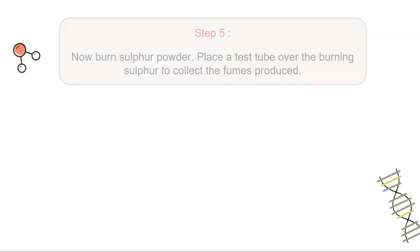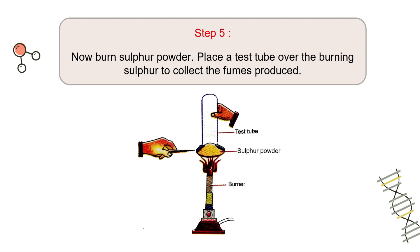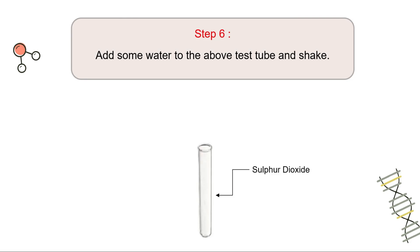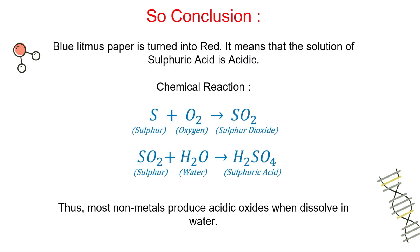Now let's do a similar activity with non-metals. The first step is to burn sulphur powder and place a test tube over the burning sulphur to collect the fumes — this is sulphur dioxide. Then add some water to the test tube and shake. Test this solution with red and blue litmus paper. The conclusion is that blue litmus paper turns red, meaning the solution — sulphuric acid — is acidic. Most non-metals produce acidic oxides when dissolved in water. Therefore, every metal gives basic oxides and every non-metal gives acidic oxides.